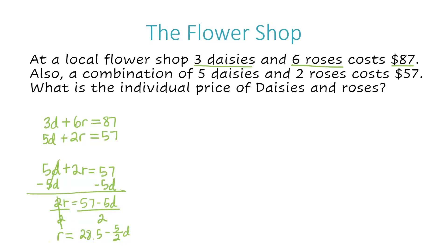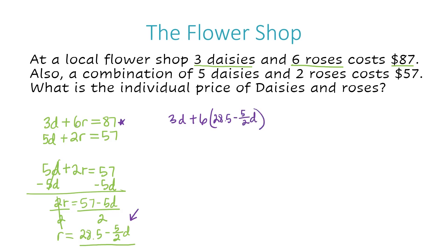This doesn't look like a final answer for R, but I have solved for R. Now I'm going to plug this value into one of the equations to calculate my D value. I'll plug it into the first equation: three D plus six R equals 87. So I write three D plus six, and instead of R I write what R equals — that's 28.5 minus (5/2)D — and then equals 87.